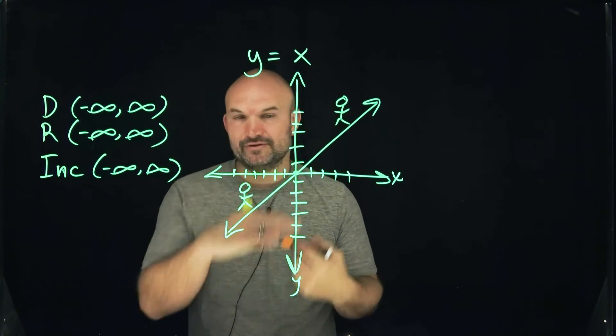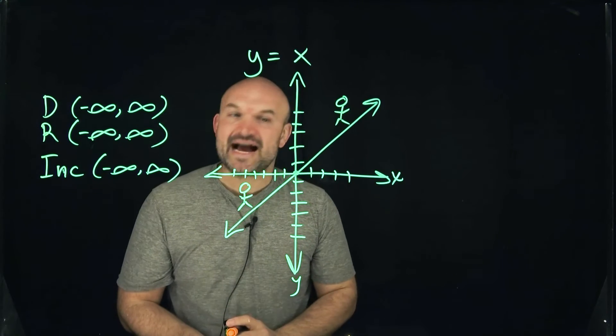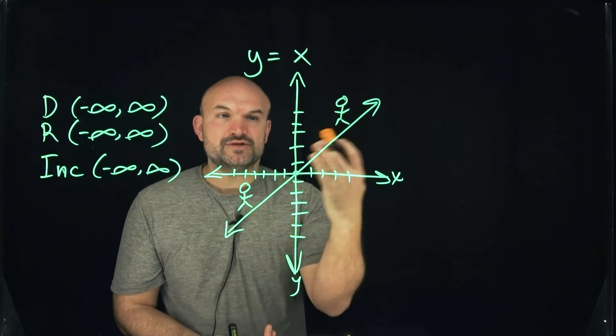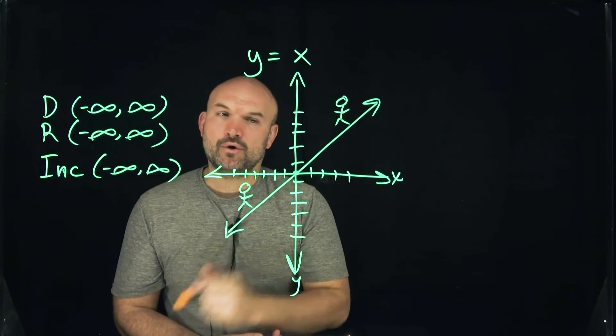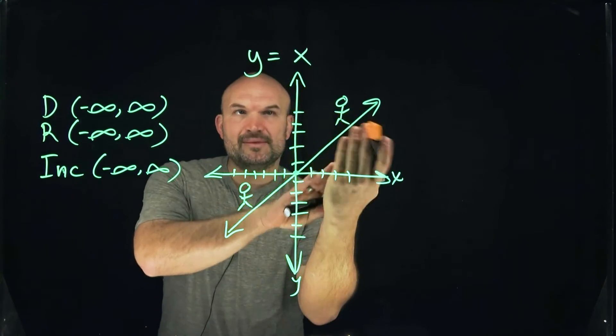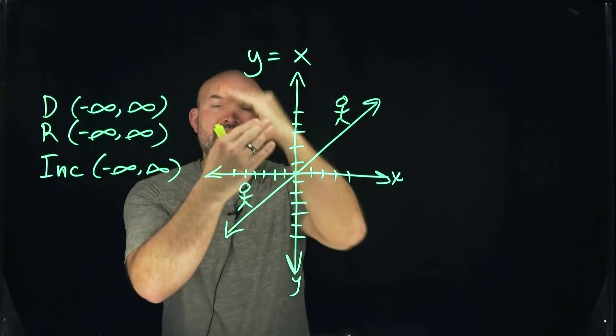An odd function is one that when you reflect it about the origin—which is this point—basically means flip it around the y-axis and then flip it about the x-axis. Let's take this graph: if we flip it about the y, it's going to look like this, and if we flip it about the x, we're going to get the exact same graph.